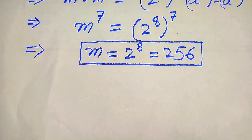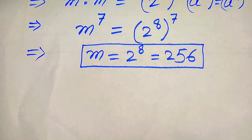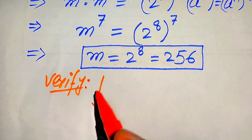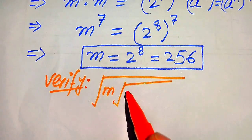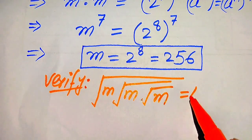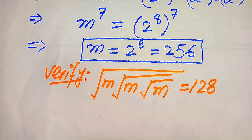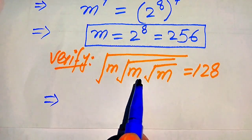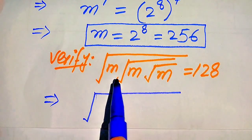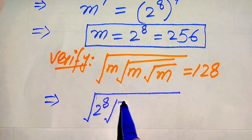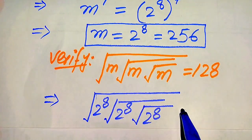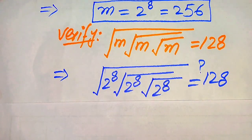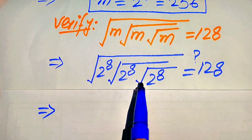Now in the next steps we need to verify this value of m. To verify, we copy down the given question: square root of m times square root of m times square root of m equals 128. We substitute the value m equals 2 to the power of eight. After substitution it becomes square root of 2 to the power of eight, inside square root of 2 to the power of eight, inside square root of 2 to the power of eight, equals 128. We need further simplifications.